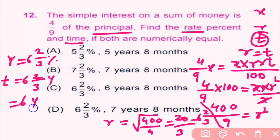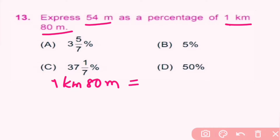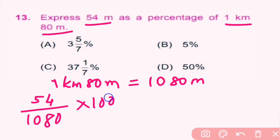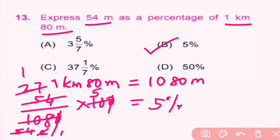Question number 13: express 54 metres as a percentage of 1 kilometre 80 metres. We first make both quantities the same unit: 1 km 80 m equals 1,080 metres. Taking it as a fraction: 54 divided by 1,080 into 100. Simplifying, this cancels to give 5%. So B is the correct answer.